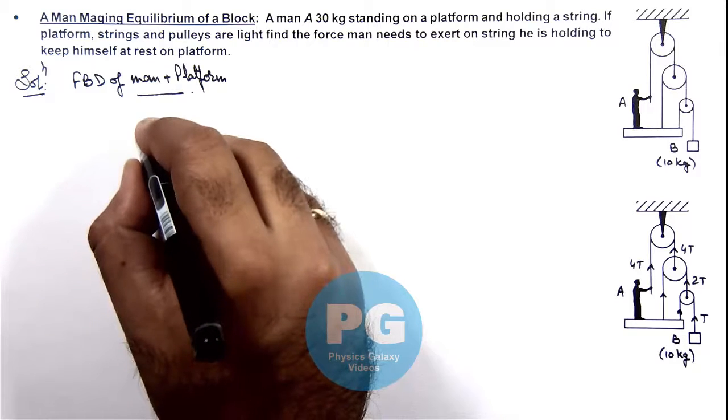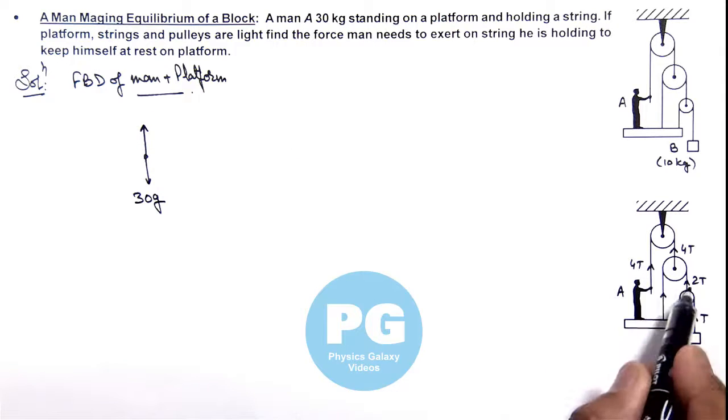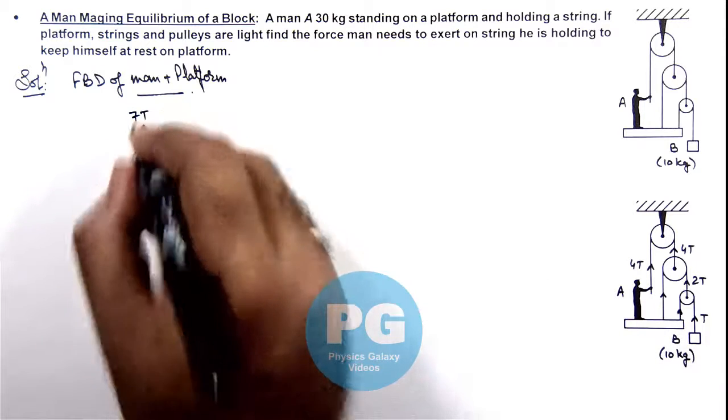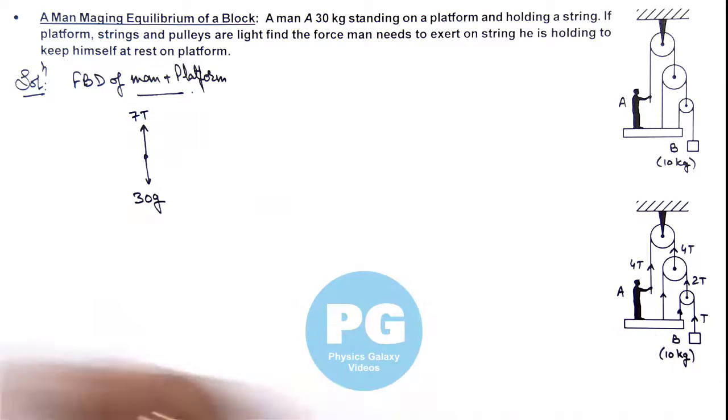In downward direction, the upward tension acting on it will be: this is 4T, this is 2T, and this is T, so it'll be 7T force, net tension acting on man plus platform system.